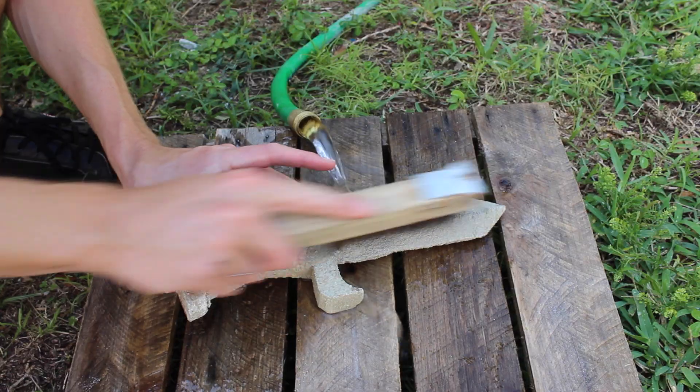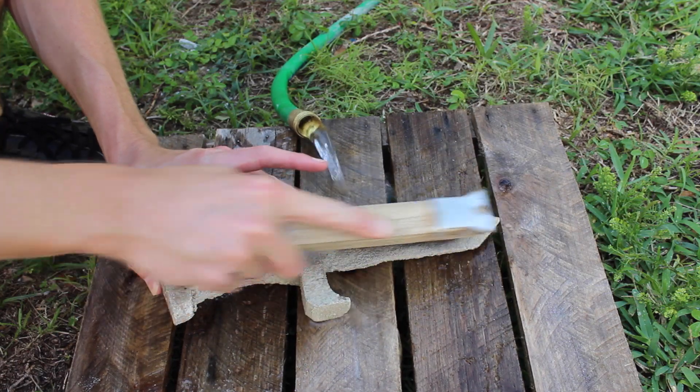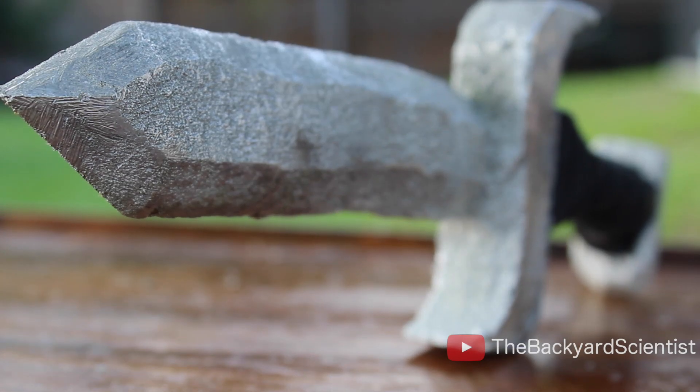Removing the sword from the extra metal was a little bit more difficult than I thought, but once I gave it a little wire brush, the sword was all done.